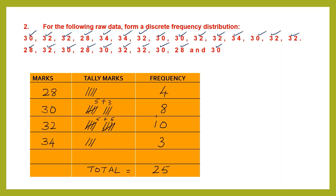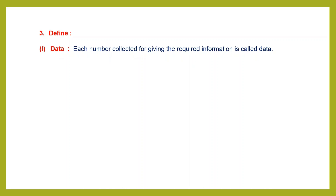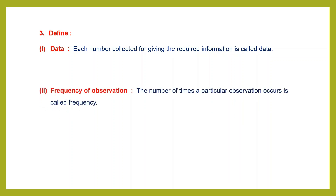This is how you put raw data into a frequency distribution table. This is called discrete because it is finite — the numbers are definite and clear. Question 3: data is the observations put in the form of numbers. Frequency of observation, as you saw in the table, is the number of times a particular observation occurs.